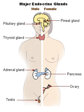Endocrine glands are glands of the endocrine system that secrete their products, hormones, directly into interstitial spaces and then absorbed into blood rather than through a duct. The major glands of the endocrine system include the pineal gland, pituitary gland, pancreas, ovaries, testes, thyroid gland, parathyroid gland, hypothalamus, and adrenal glands. The hypothalamus and pituitary gland are neuroendocrine organs.